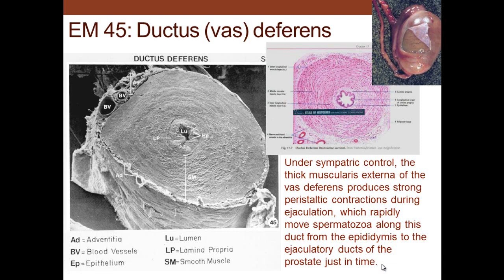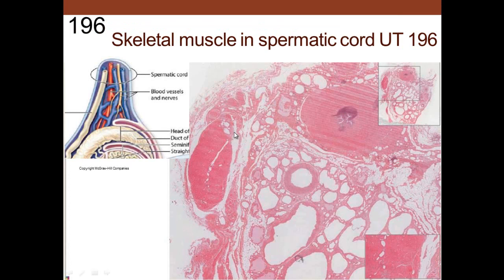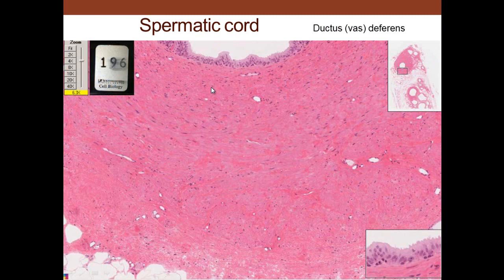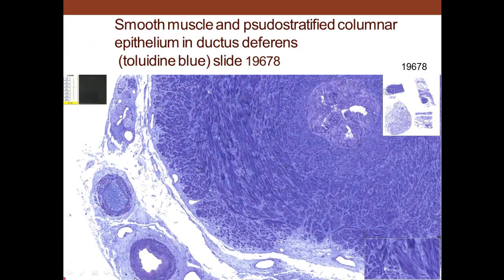If sperm are moved up toward the ejaculatory ducts but ejaculation does not occur, they are moved back into the epididymis for storage in a cooler location. There is skeletal muscle in the spermatic cord, as well as a lot of smooth muscle around the ductus deferens, and blood vessels and lymphatics - arteries, veins, and lymphatics. Here we see the spermatic cord with an artery, vein, a valve in one of the veins, large nerves, and the ductus deferens with a big layer of smooth muscle with one, two, three different layers and adventitial tissue.